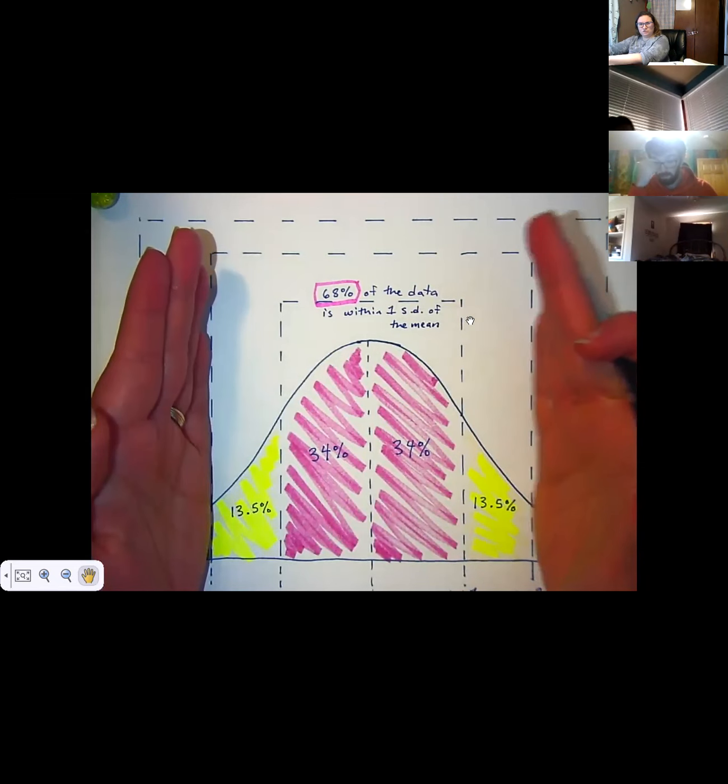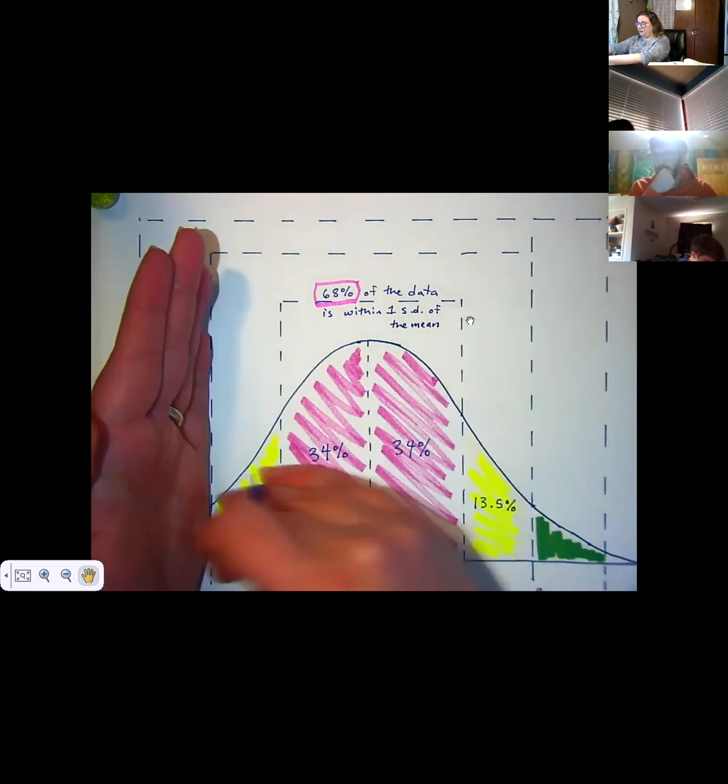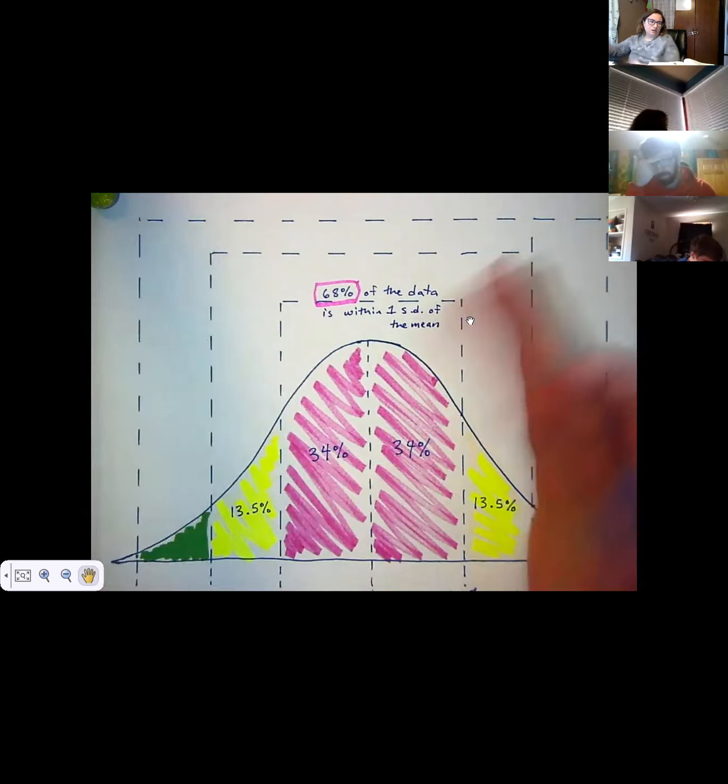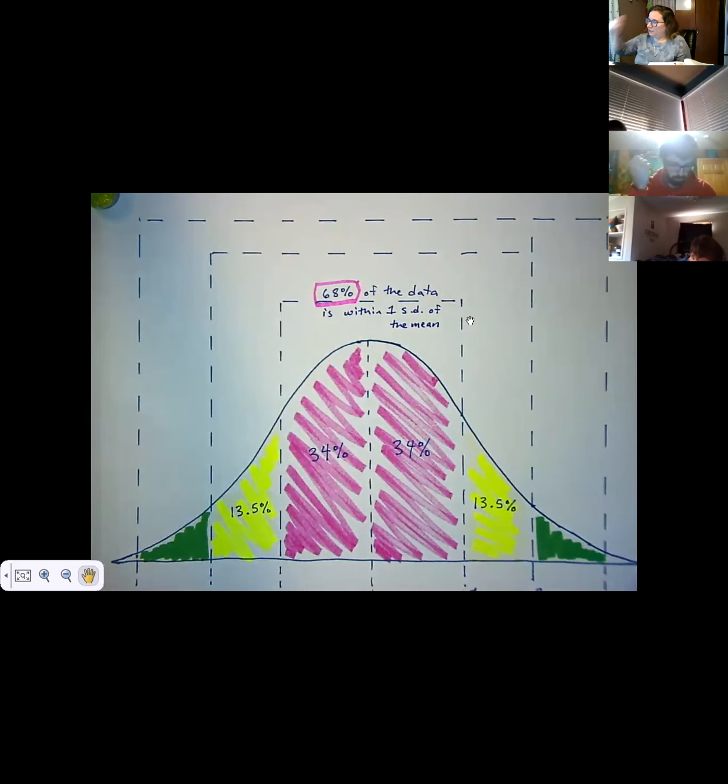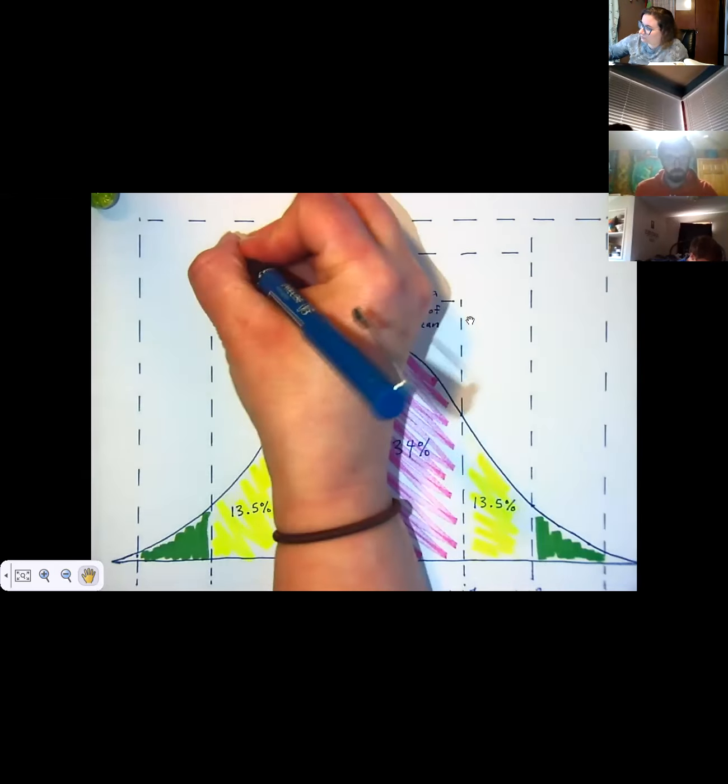So how would we figure out what percent of the data is between these lines? You don't have to tell me the answer, just tell me what I would do. 68% plus 13.5 plus 13.5. Exactly. So if I add up everything in between here, that's what would end up getting,